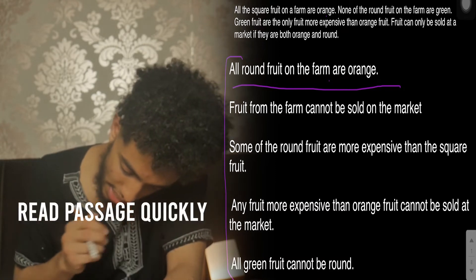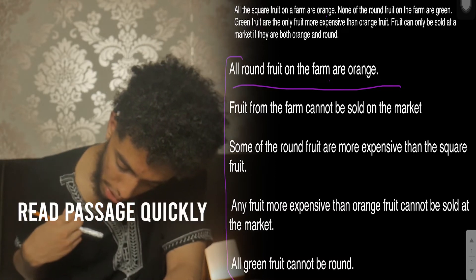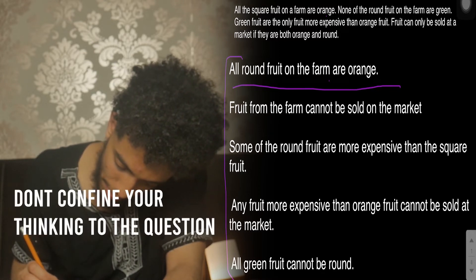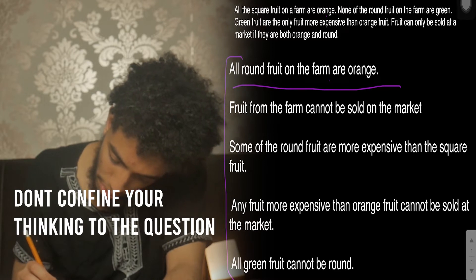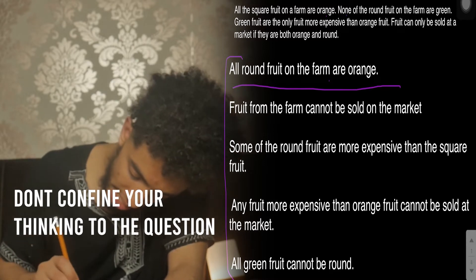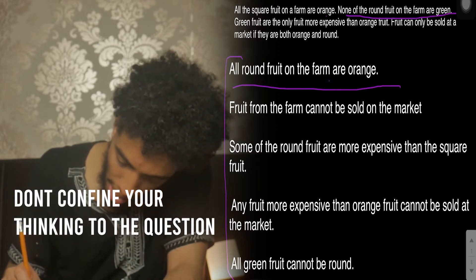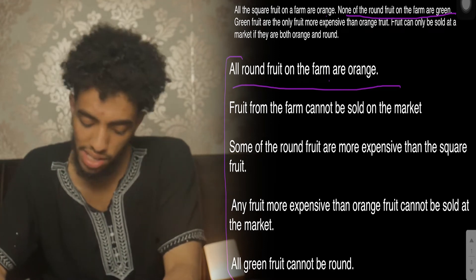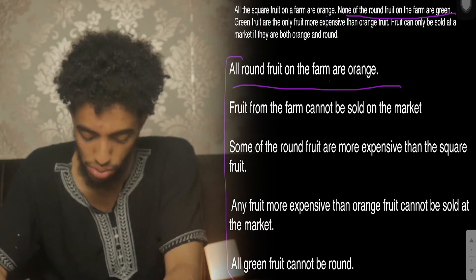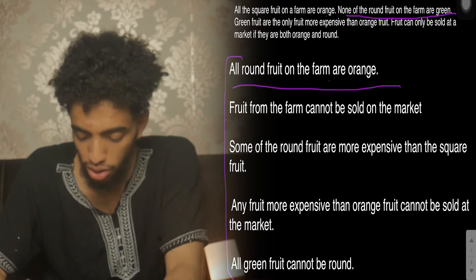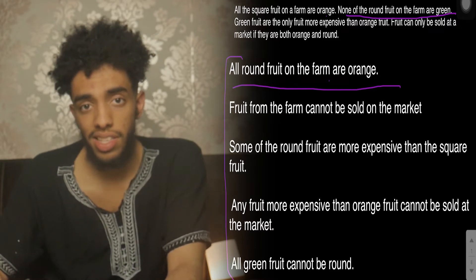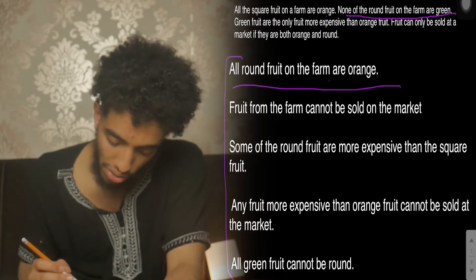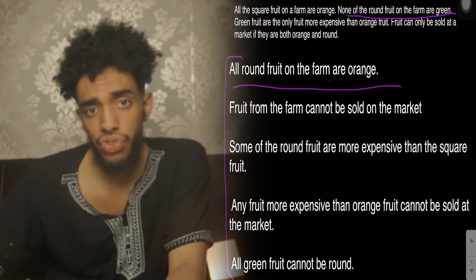Looking at the first sentence — all the square fruit on the farm are orange, and none of the round fruit on the farm are green. So round fruit cannot be green, but it could potentially be another color. It doesn't have to be orange. Even though orange is mentioned in the passage, you're not restricted to two colors.